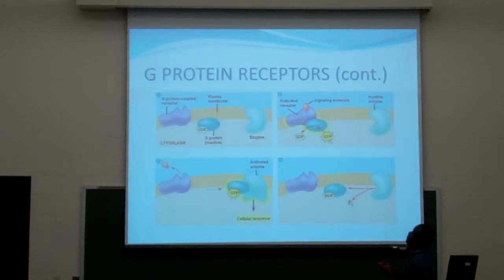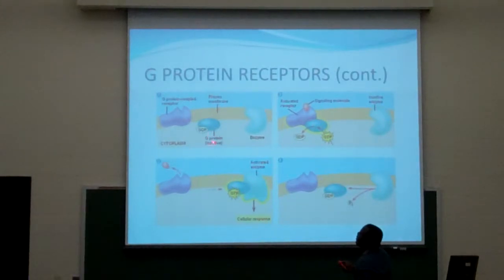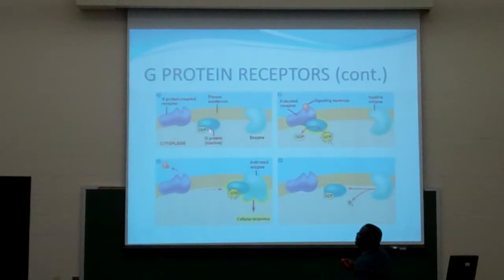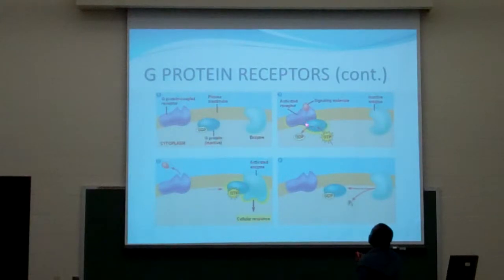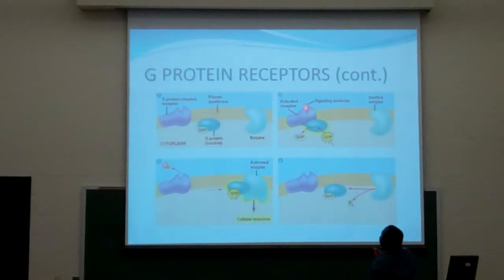This is a diagram that explains how the G-protein receptors work. Here you can see that the G-protein receptor is active. The G-protein is going into a GDP form, which is an inactive form in the body. At this stage it's in an inactive form. When a signal is received by the receptor, the G-protein in the GDP converts to a GTP. Then a subunit travels down to the receptor to receive a signal and reaches a nearby enzyme.